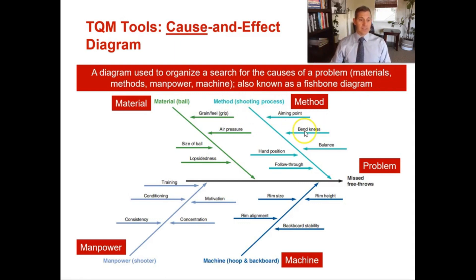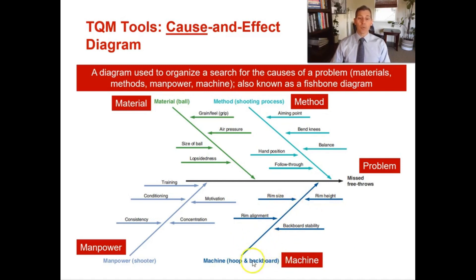So if your problem — your effect — is missed free throws, a fishbone diagram looks at all the probable causes, and you brainstorm them together and generate ideas for what could be causing the issue.